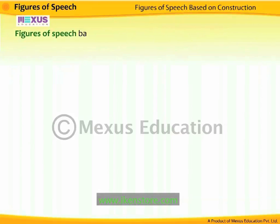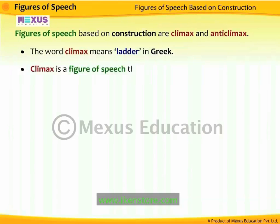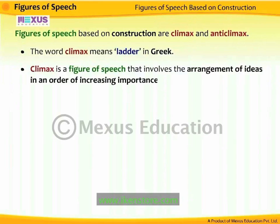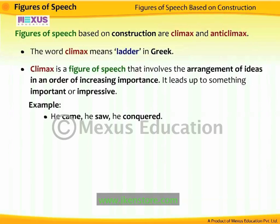Figures of speech based on construction are climax and anticlimax. The word climax means 'ladder' in Greek. Climax is a figure of speech that involves the arrangement of ideas in an order of increasing importance — it leads up to something impressive. For example, 'he came, he saw, he conquered.' The actions of coming, seeing, and conquering are arranged in an order of increasing importance.